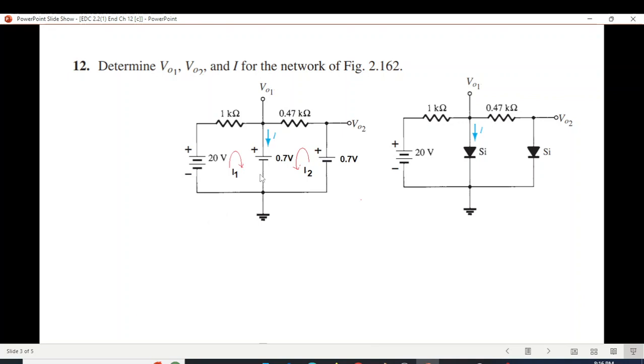Now from the circuit you can see V01 is actually this voltage, so 0.7 volt. Also V02 is this voltage, so 0.7. So we'll write it. The two answers: V01 is 0.7 and V02 is also 0.7.